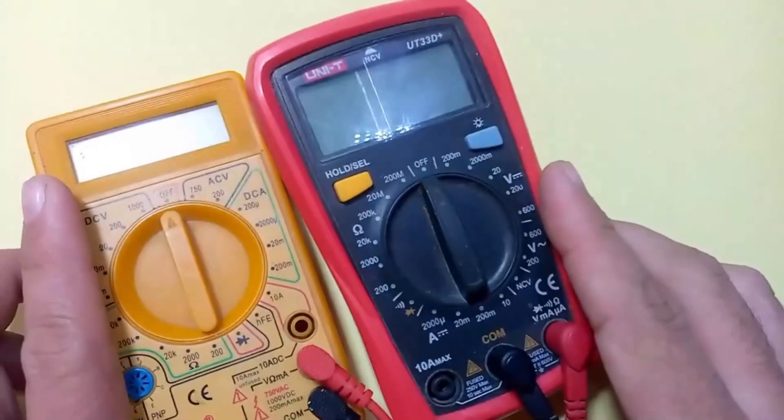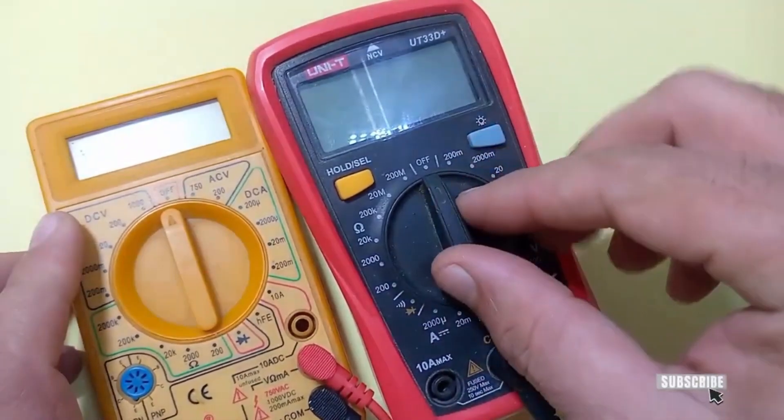We can use different type of multimeter such as analog as well as digital multimeter.